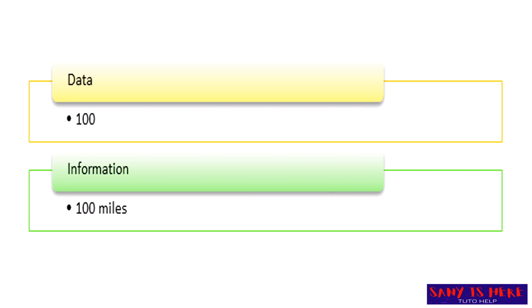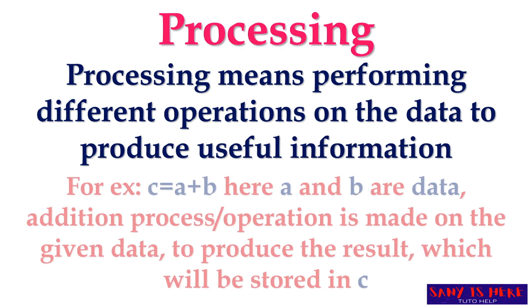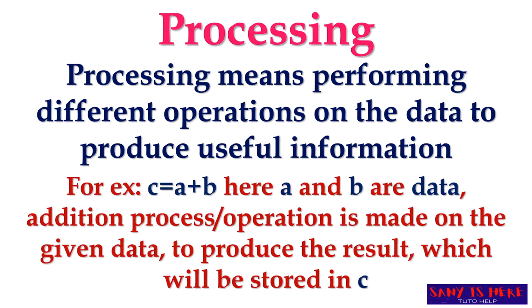Let us see another example. If we just have the number one hundred alone, we don't know what it means. But it becomes information when it is processed — when you work on the data, it will become information. So let us see what is processing.